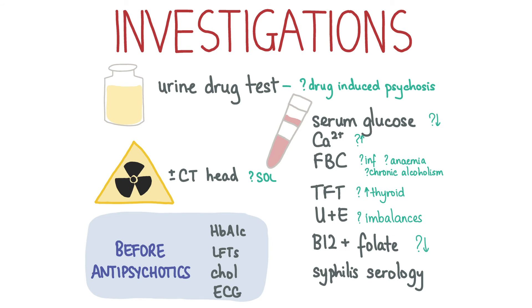As part of the assessment, patients should be investigated for organic causes. Bloods include FBC, TFTs, glucose, serum calcium, B12 and folate, and urine and electrolytes. Other bloods include a baseline HbA1c, LFTs, and cholesterol before commencing antipsychotic therapy. Abnormal LFTs may also suggest alcoholism, which is an important differential diagnosis. A baseline ECG is also performed as a prolonged QT interval can develop as a result of taking antipsychotics.